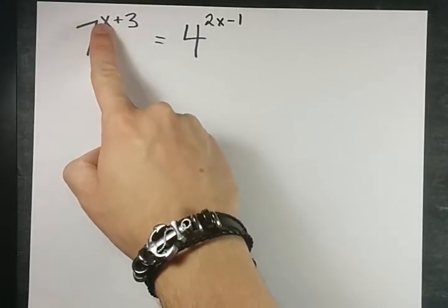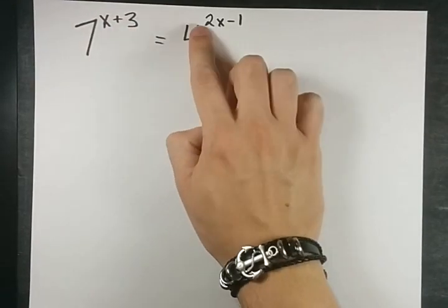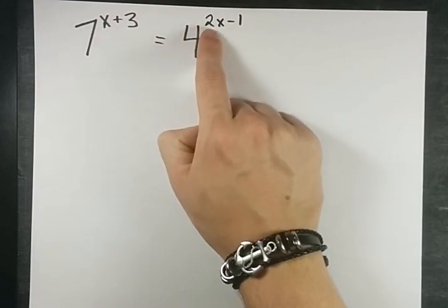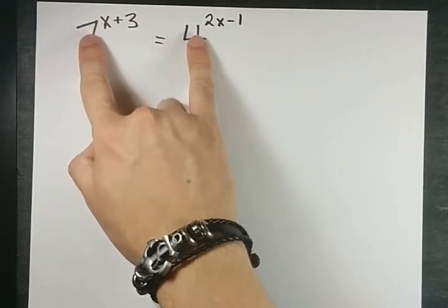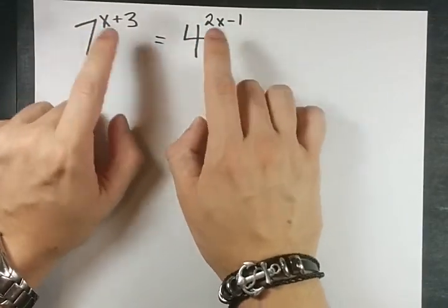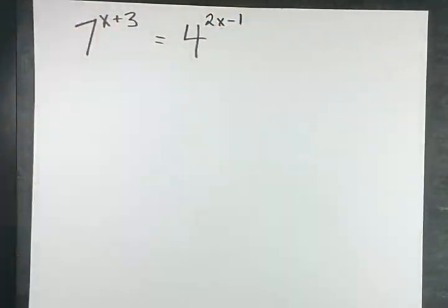If this was 2 to the x plus 3 and 4 to the 2x minus 1, I would have rewritten this as 2 squared and then dropped the twos. I'd set the exponents equal to each other because they have the same base, but that's not the case here.